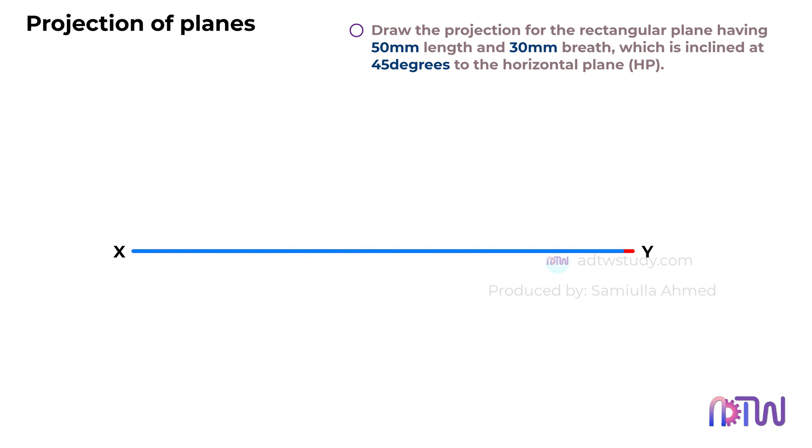Here is our reference line. We will draw a rectangle with the given dimensions, 50mm in length and 40mm in breadth. Label the sides of the rectangle accordingly, as this represents the true shape of the plane. Next, project vertical lines upward from each corner of the rectangle to the reference line. These lines indicate the true length of the rectangle.